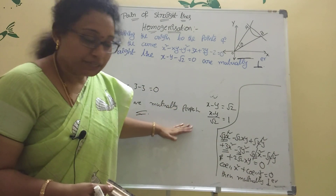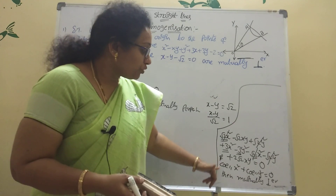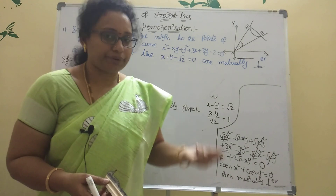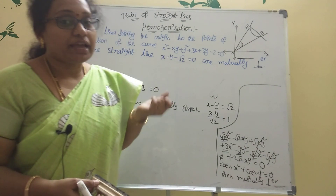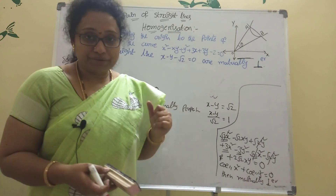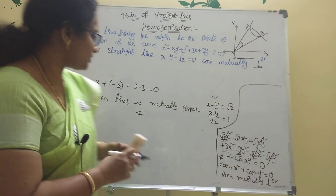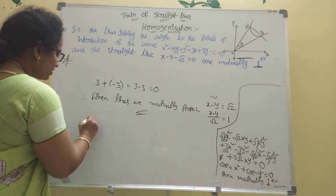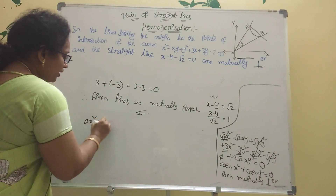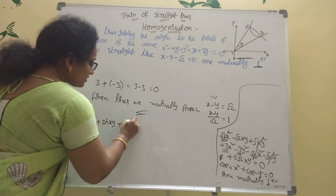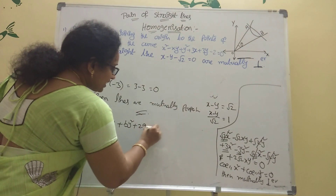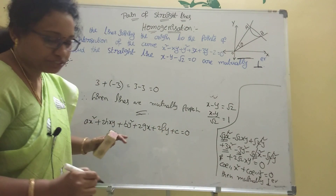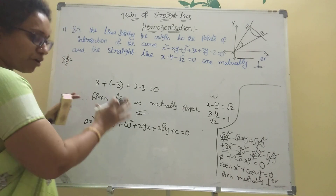The condition for mutually perpendicular is that coefficient of x squared plus coefficient of y squared equals 0. The two lines are also mutually perpendicular with the angle formula. The pair of straight lines formula is ax squared plus 2hxy plus by squared plus 2gx plus 2fy plus c equal to 0. This is the equation and formula.